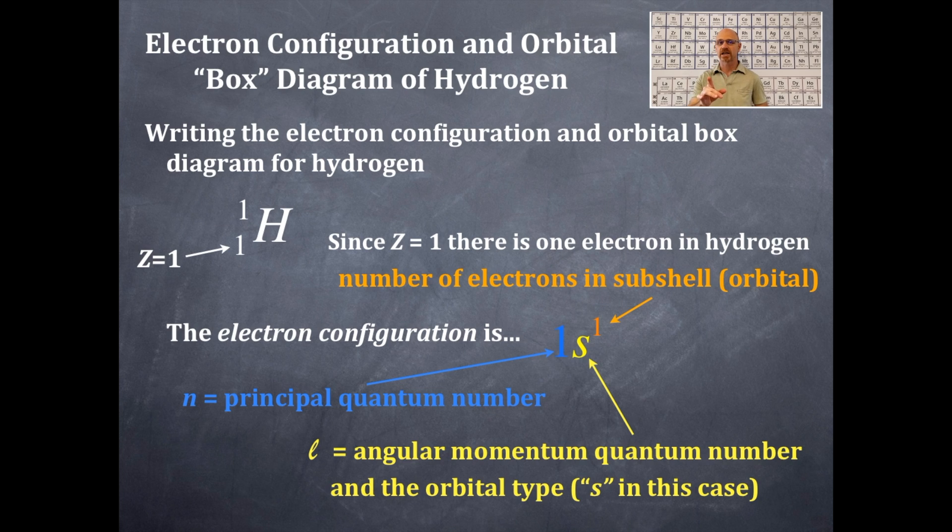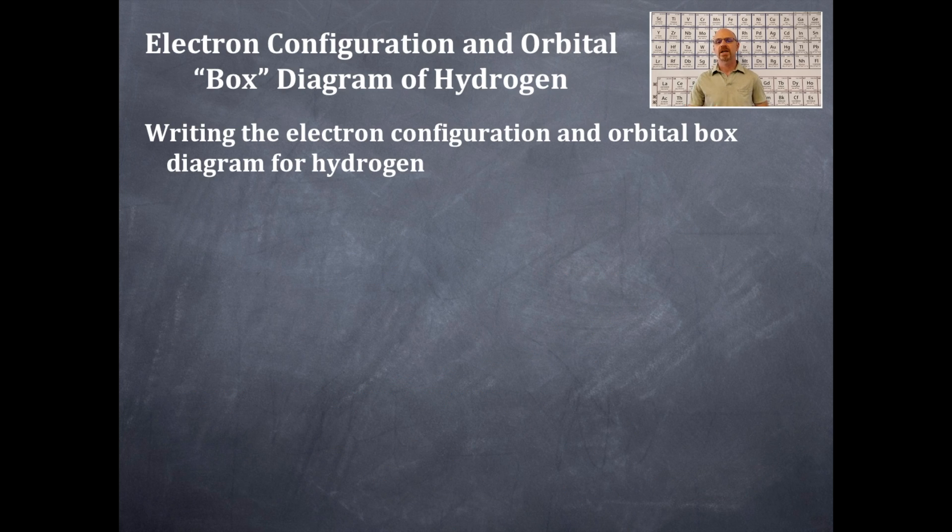So we're not done yet, so hold on here. Because this is the electron configuration for hydrogen, which is 1s1. We still need to write the orbital box diagram for hydrogen. So we're going to write the orbital box diagram for hydrogen now.